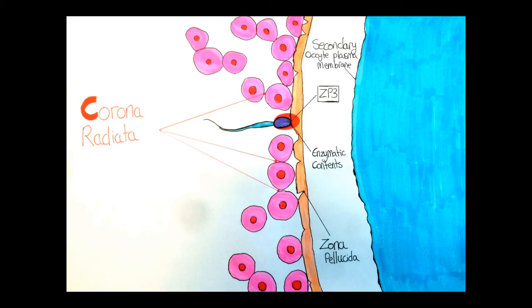Once contacting the zona pellucida, receptor proteins on the surface, called ZP3, bind with proteins that are expressed in the head of the spermatozoa. This binding triggers the acrosomal reaction, which results in the release of digestive enzymes, allowing the sperms to dig their way through the zona pellucida and into the perivitelline space.